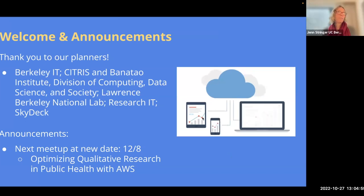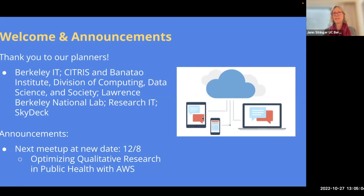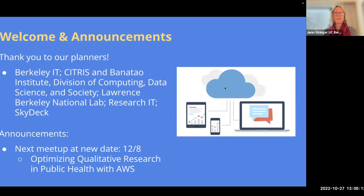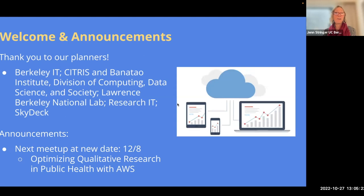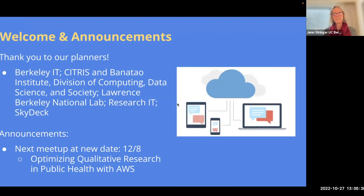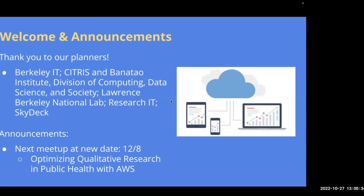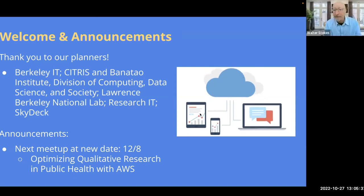I'll just point out that the big AWS conference is happening the second week of November or something like that. My guess is that several folks from here might be going, and I would just encourage the Berkeley cohort, if you are going, to connect up, make a great showing for Berkeley and maybe even connect up with each other in person if you get a chance. We've been doing that at Educause, and it's just great to see people that I've only seen on Zoom for several years in person. That's a great reminder, Jen. Thanks for saying that.